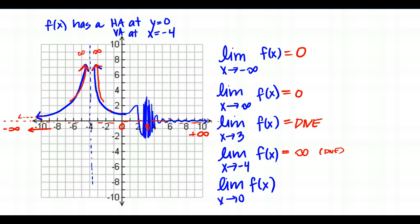Finally, the limit as X approaches 0 of f of X. As X gets close to 0 from both sides, I get closer and closer to a Y value of 1. The function is defined there with no hole in the graph, so the limit as X approaches 0 of f of X equals 1.